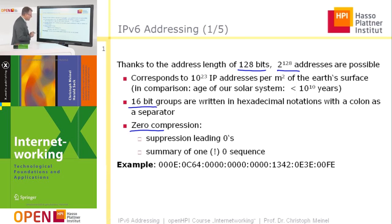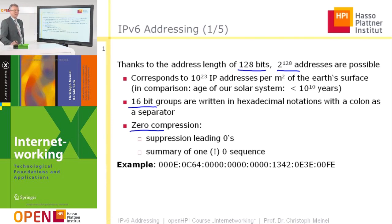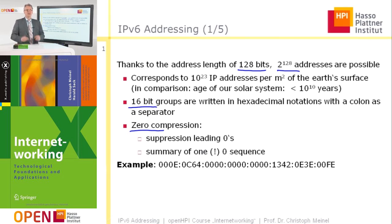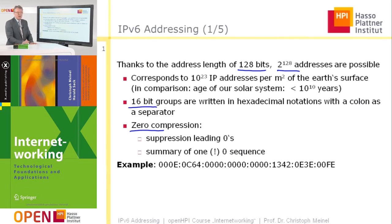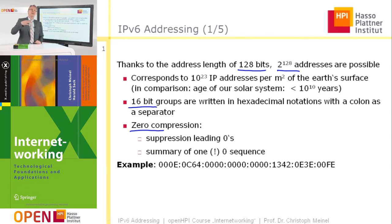It is easier to understand with an example. Here we have the 8 groups separated by colons and written in hexadecimal notation. Hexadecimal notation means that instead of the 10 different symbols used in decimal notation, we have 16 different symbols. The first 10 symbols, 0 through 9, are used, and then for the remaining 6 symbols, the first letters of the alphabet — A, B, C, D, E, F — are used.